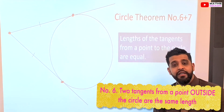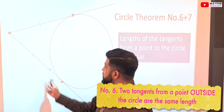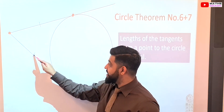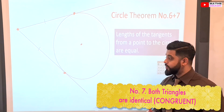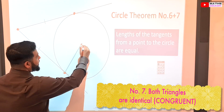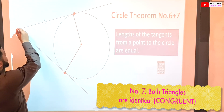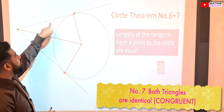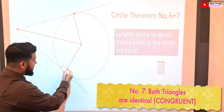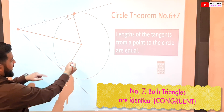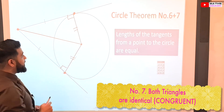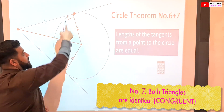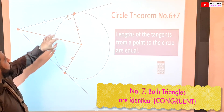Circle theorems six and seven. If you have two tangents to a circle from a point outside the circle meeting at two points on the circle, then those two tangent lines are exactly the same length. Circle theorem number seven: if you draw a radius to each tangent point and a line from the center to the external point, then those two triangles are congruent. They both make 90 degrees with the tangent, share the same radius, have equal tangent lengths, and share the same hypotenuse.